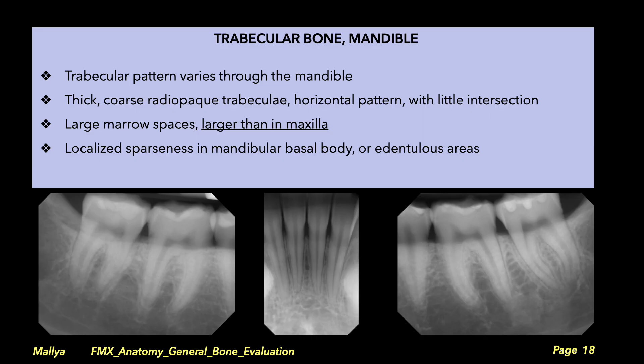Localized areas of trabecular sparseness can be identified in the maxillary tuberosity or in edentulous areas. In contrast, the trabecular architecture in the mandible is quite variable in different parts of the jaw. Unlike in the maxilla, the trabeculae are thick and coarse, arranged in a horizontal pattern with little intersection. The marrow spaces in the mandible are larger than those in the maxilla, and within the mandible, the posterior marrow spaces tend to be larger than those in the anterior. The horizontal arrangement of bony trabeculation is more marked in the posterior mandible, and the trabeculation in the basal body of the mandible, inferior to the apices of the mandibular molars, is relatively sparse.